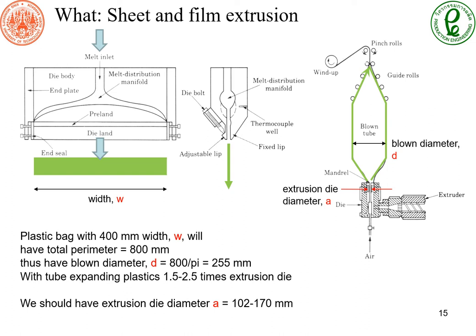For example, if you want to make a plastic bag with 400 mm width, the fully blown plastic bag will have an 800 mm perimeter or circumference. So the blown diameter is 800 mm over π, or 255 mm. Generally, plastic film will be blown 1.5 to 2.5 times the extrusion die diameter. So our extrusion die diameter should be in the range of 102 to 170 mm.